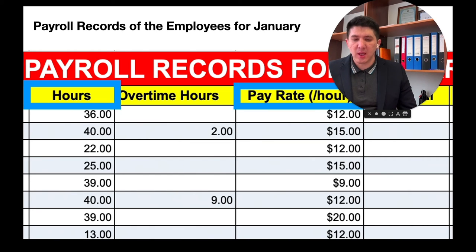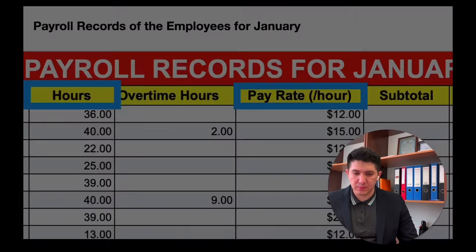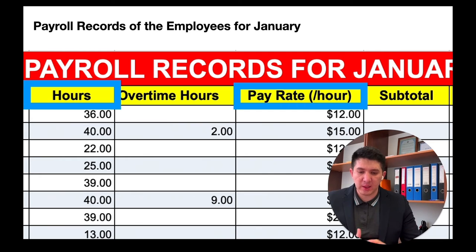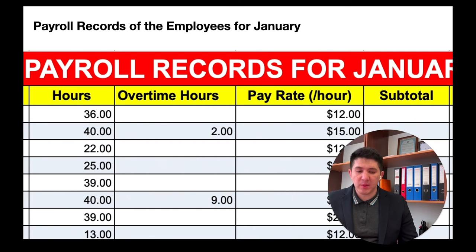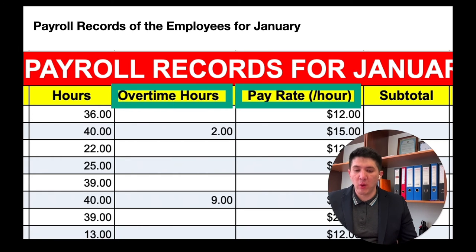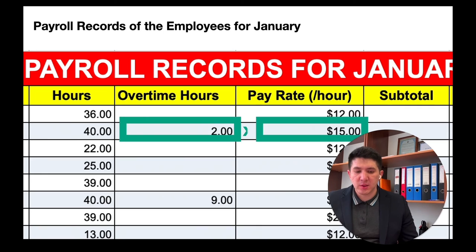First of all, we are going to calculate the hours times the pay rate. To calculate the subtotal, I'm going to multiply the hours by the pay rate. The first employee has worked 76 hours and every hour is paid $12, so the subtotal is the multiplication of 76 by 12. There is also a column called overtime hours — if the employee works overtime, the pay rate is going to be multiplied by 1.5.